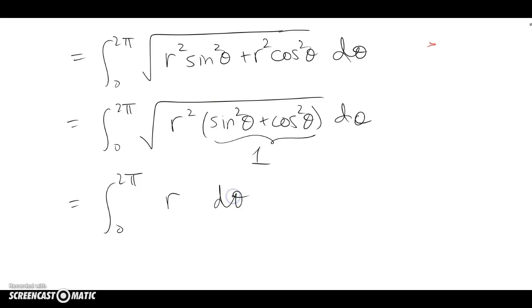So we end up with r theta from 0 to 2π, and that's going to give me r times 2π minus 0, which is 2πr. So the circumference of a circle of radius r is 2πr.